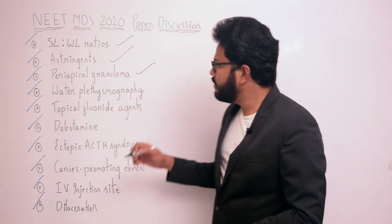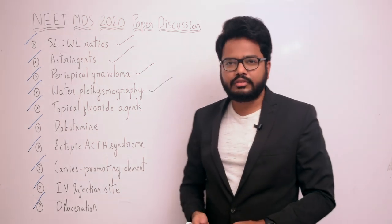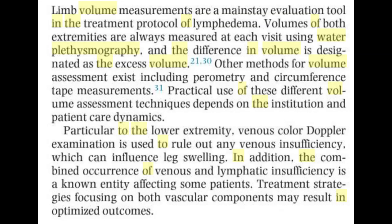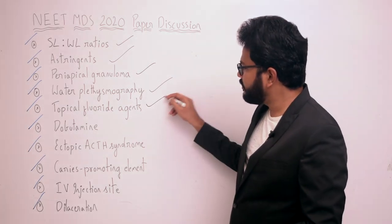Moving on to plethysmography. Plethysmography is an instrument for measuring changes in volume within an organ or whole body. The word is derived from the Greek terms 'plethysmos,' meaning increasing or enlarging, and 'graphos,' meaning to write. In the treatment protocol of lymphedema, limb volume measurements are a mainstay evaluation tool, and volumes of both extremities are always measured at each visit using water plethysmography; the difference in volume is designated as excess volume.